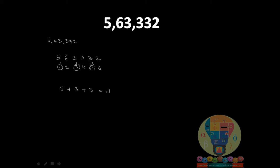Now take the even-place digits. In place two you have six, in place four you have three, and in place six you have two. So six plus three plus two equals eleven. The difference is eleven minus eleven equals zero. Since we got zero, five lakh sixty three thousand three hundred thirty two is divisible by eleven.